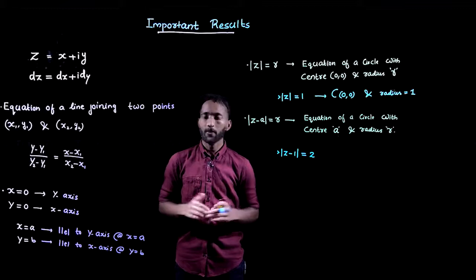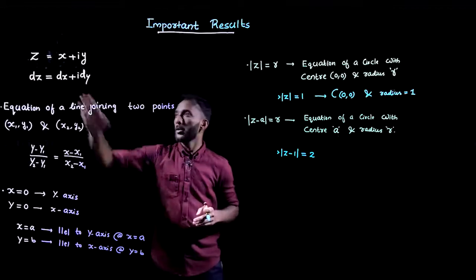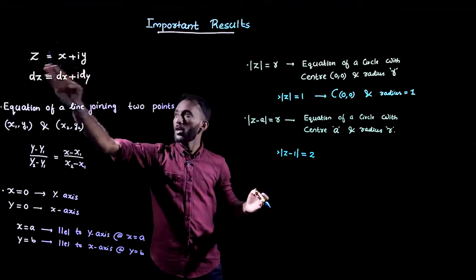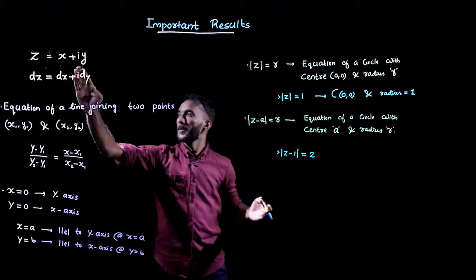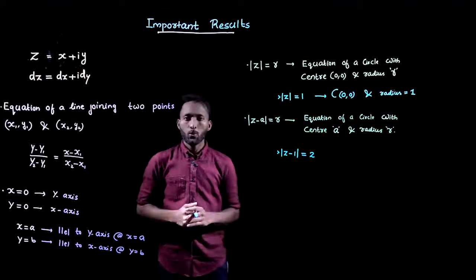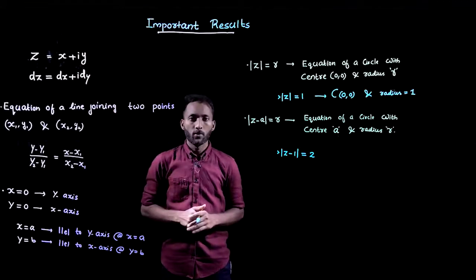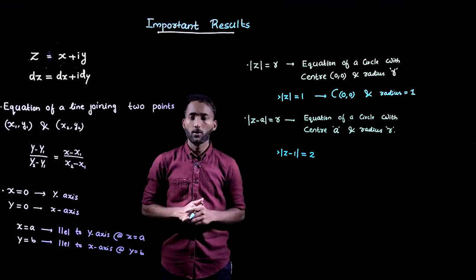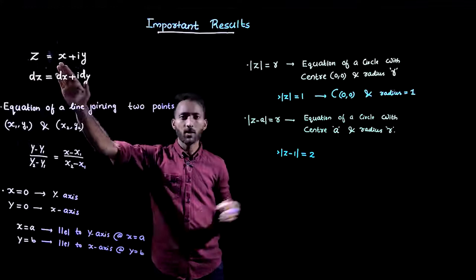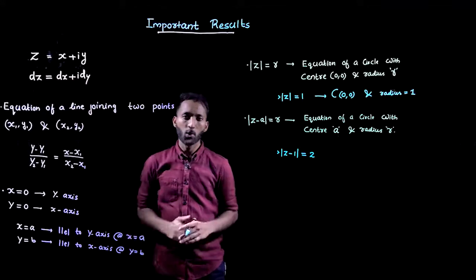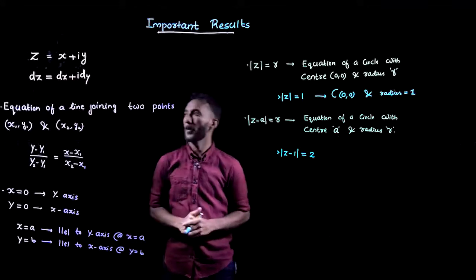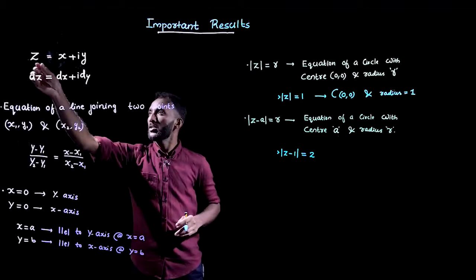z is always equal to x plus i·y. Here x is known as the real part of z and y is known as the imaginary part of z. If you consider the conjugate of a complex number, the conjugate is denoted by z-bar and it will be equal to x minus i·y. All these results we already discussed in module 1.